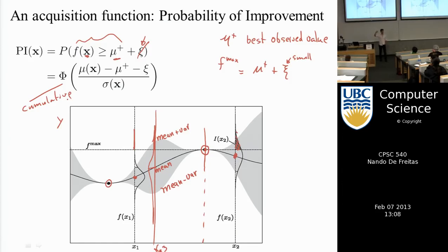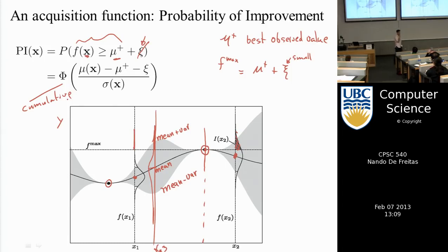If you knew not just the best you've done so far but also a particular threshold — for example the best that can happen — you could ask what is the probability of doing better than that threshold. Even though probability of improvement is the least used in practice, in situations where you know the best possible reward, it turns out to be extremely powerful compared to the others.